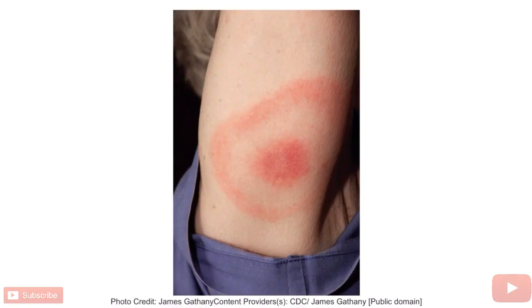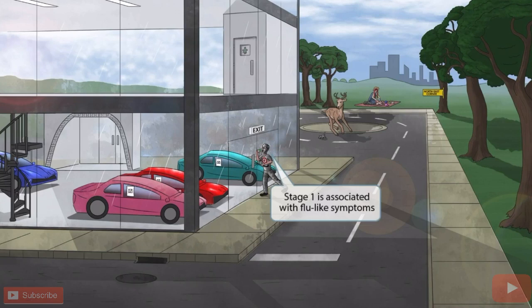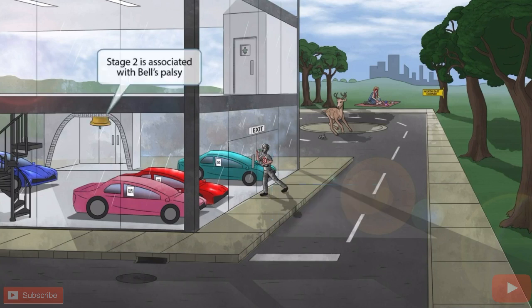This is an image of erythema migrans. As you can see, there is a central region of erythema surrounded by a ring, and this resembles a bullseye. Notice that we've shown the burglar guy sweating profusely — he's about to break into a car shop, so he's a bit nervous. The sweat is here to help you remember that stage one of the infection is associated with flu-like symptoms.